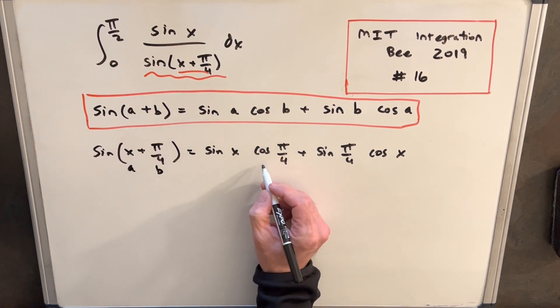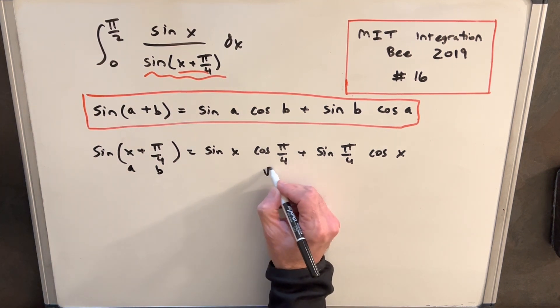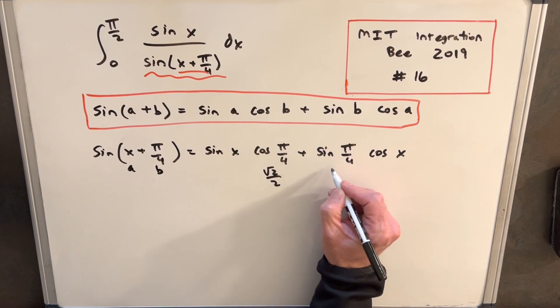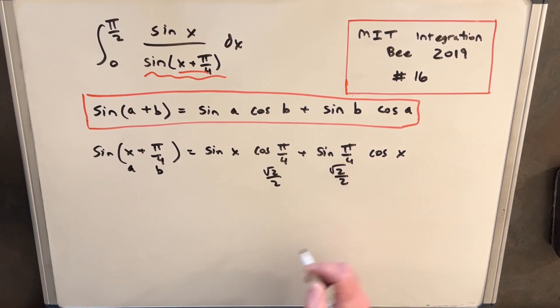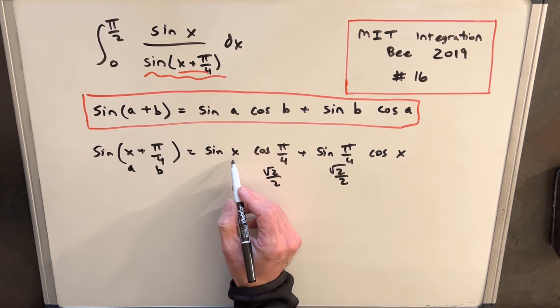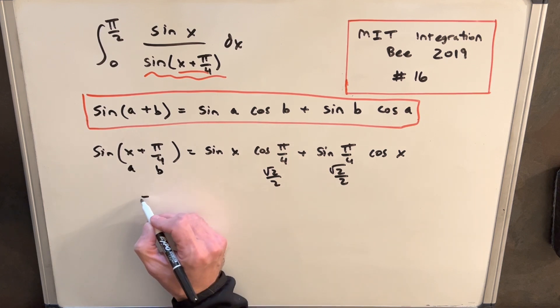The nice thing about this is for cosine pi over 4 and sine pi over 4, it's the same value. This is actually square root of 2 over 2, and then a little bit of simplification.